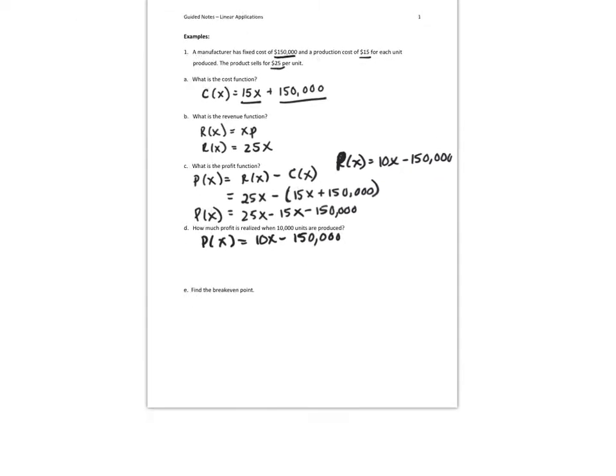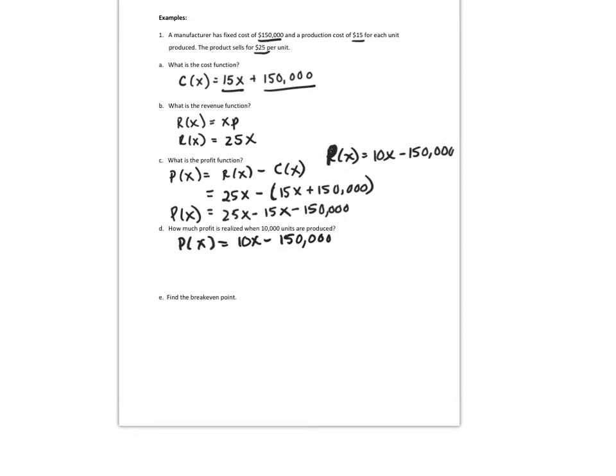And we're going to find how much profit is realized when 10,000 units. So I'm trying to find profit, 10,000 units. So P of 10,000. Profit is a function of X, number of units.